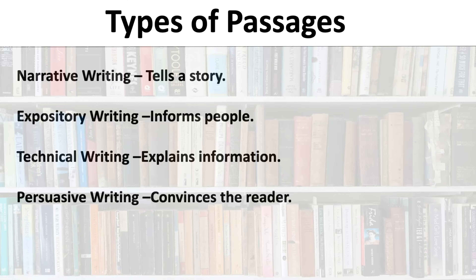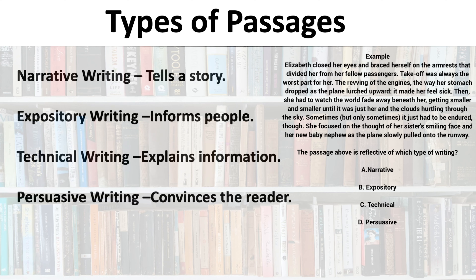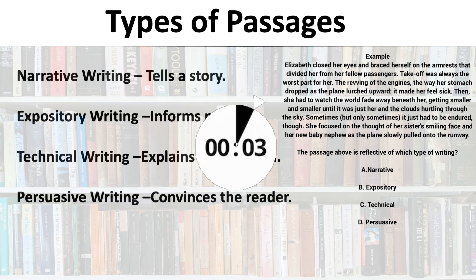Types of passages. On the HESI, you will be asked to identify which type of passage you're reading. Narrative writing tells a story — this can be a novel, short play, or book. Expository writing informs people — this can come in the form of a newspaper or magazine article. Technical writing explains information — this can be a product manual or directions. Persuasive writing convinces the reader — this can come in the form of an opinion column, a blog, or an argument paper. Here's an example — pause the video here and in three seconds the answer will be revealed.